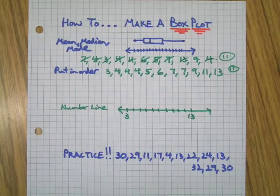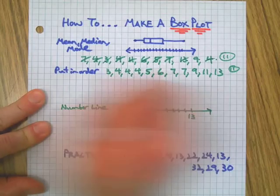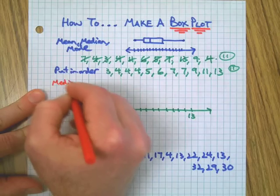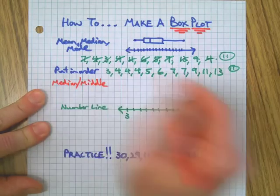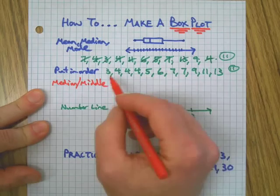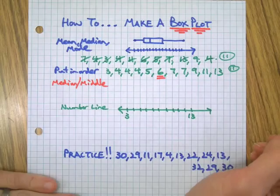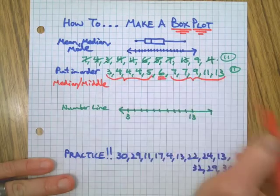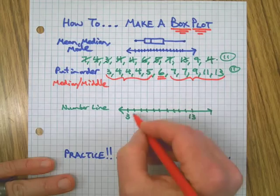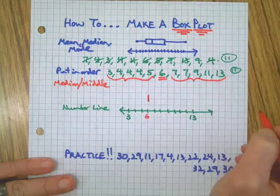Now what we do is we find the median, which is the number in the middle. That's why we need to put them in order. Since we have 11 numbers here, 1, 2, 3, 4, 5, 6, the sixth number evenly splits the set. So I have five numbers on each side. The 6 is the median, and we put a little bar right there.